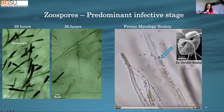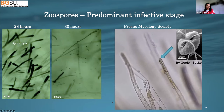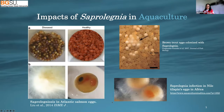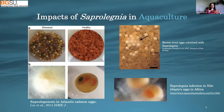I borrowed this video from the Fresno Mycology Society to show you how many zoospores are released from just one sporangia. You can see they swim not in a random pattern — they go looking for a new host, they are looking for food. If they don't find food, they go to a resting stage and can re-emerge again as zoospores.